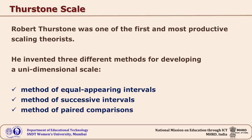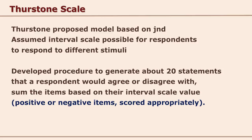There are different types of scales associated with statistical analysis: nominal scale, ordinal scale, interval scale, and ratio scale. Thurston said that while preparing this attitude scale, we can assume that interval scale is appropriate. The respondents will be able to respond to the stimuli if the scale is on an interval scale. He developed a procedure by which we can generate 20 statements, some positive and some negative, on which respondents will respond.